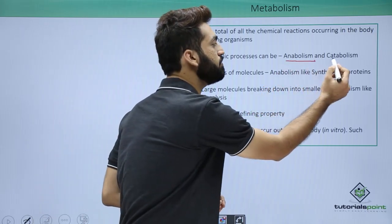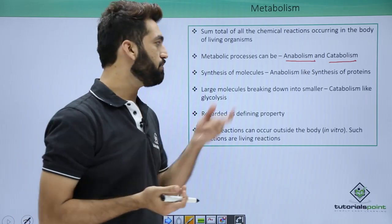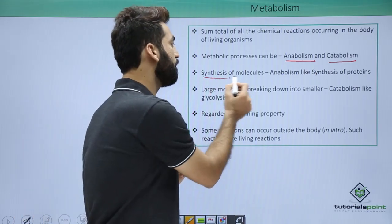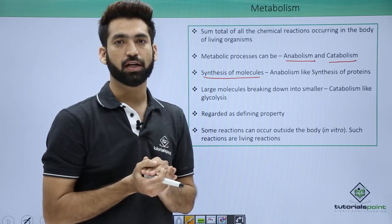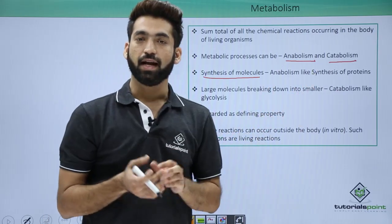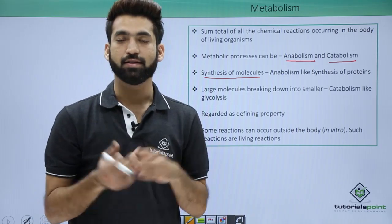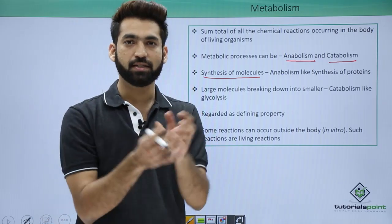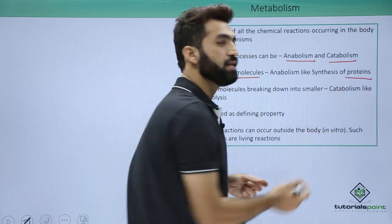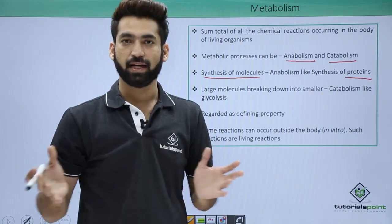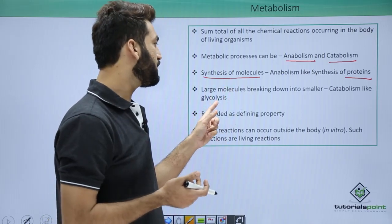There are two terms: anabolism and catabolism. Anabolism is the synthesis of bigger molecules when small molecules combine to form larger ones. For example, in translation — which is protein synthesis — many amino acids come together, form a chain, and synthesize a protein. Protein is made up of many amino acids, which is an example of anabolism.